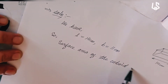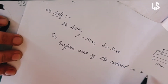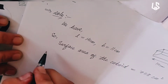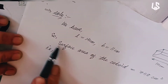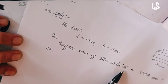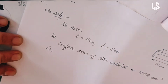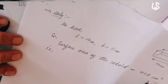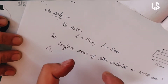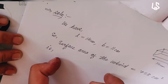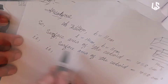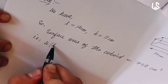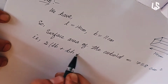The surface area of the keyboard — cuboid — is 758 square centimeters. The surface area formula is: 2 times (length times breadth, plus breadth times height, plus length times height).